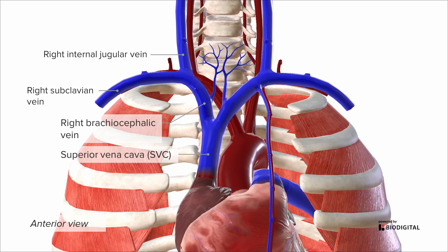It's variable, but usually the right inferior thyroid veins are also going to drain into the brachiocephalic right before it goes into the SVC.